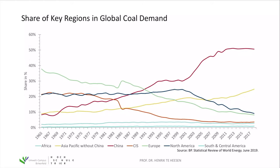The share of key regions in global coal demand — again from the BP Statistical Review — shows that China has increased its share significantly, now at about 50% of global coal use in power plants. On the other hand, Europe's share — marked in green — has dropped, and North America's share has dropped since around the year 2000. Meanwhile, other Asian countries like India are increasing their share, using more and more coal in power plants to generate electricity.